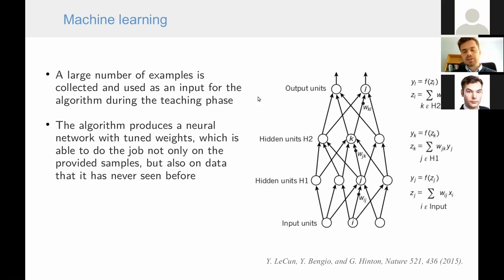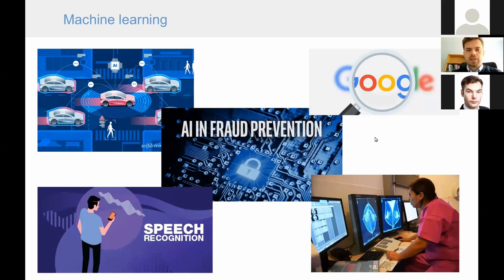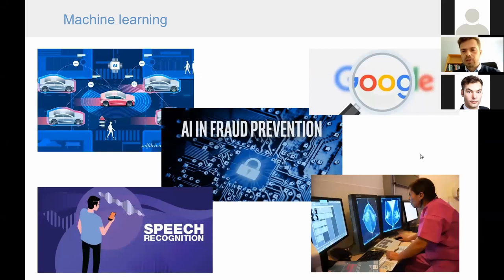What is important is that neural networks can perform tasks not only on training data but also on data they have never seen before. There is a very large range of applications: every time we type a Google search, a neural network provides the answer. Neural networks are also used in autonomous vehicles, speech recognition, fraud prevention, and medical diagnosis.